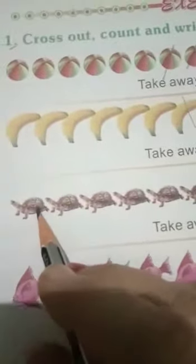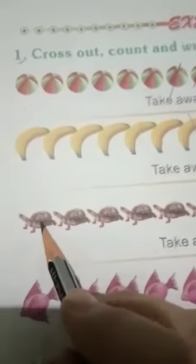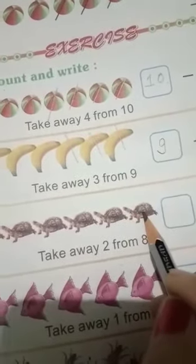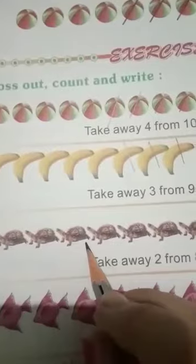Next, count: 1, 2, 3, 4, 5, 6, 7, 8. Okay, write down 8 in the box. These are 8 tortoises.